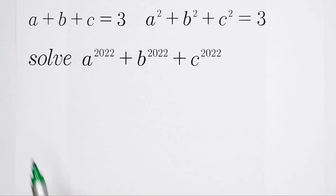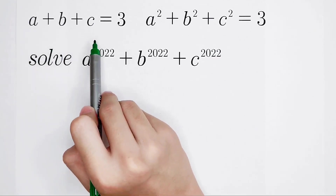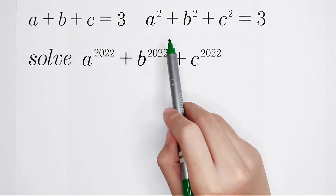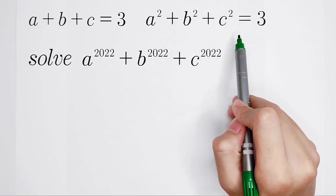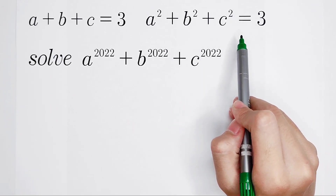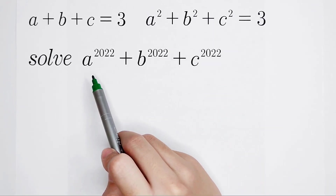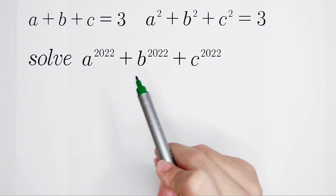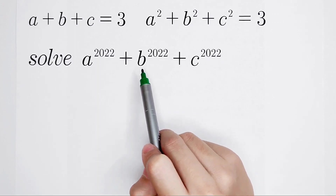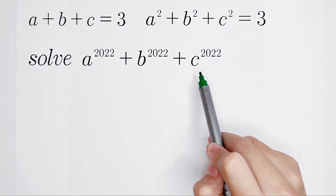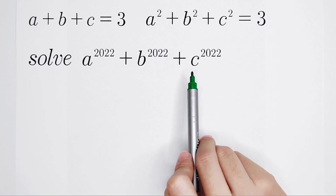Welcome to Math Window. A plus B plus C is equal to 3, and A squared plus B squared plus C squared is also 3. Solve the value of A to the power of 2022, plus B to the power of 2022, plus C to the power of 2022. How can I solve it?